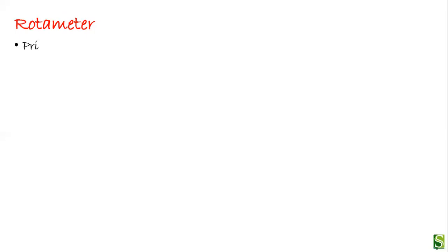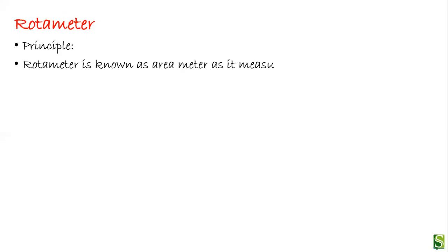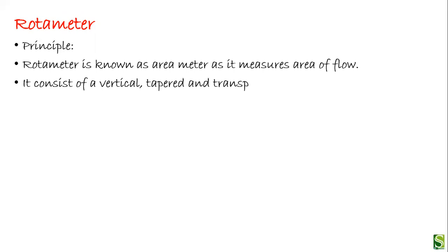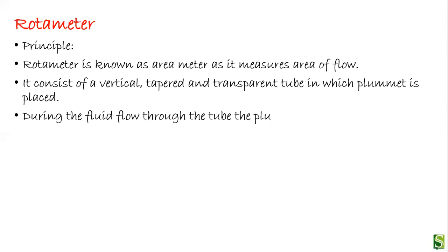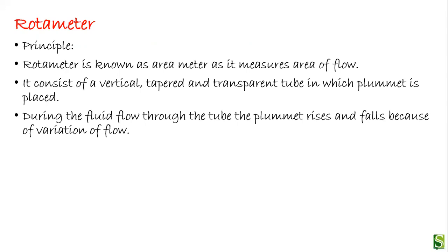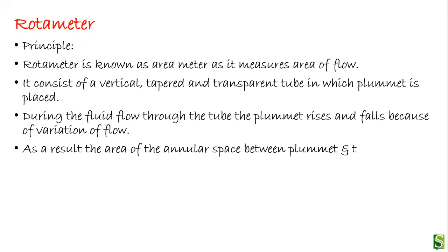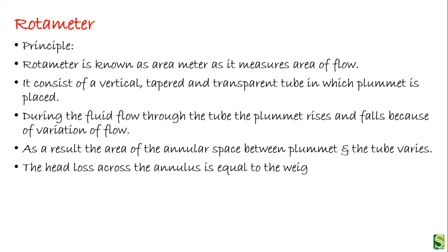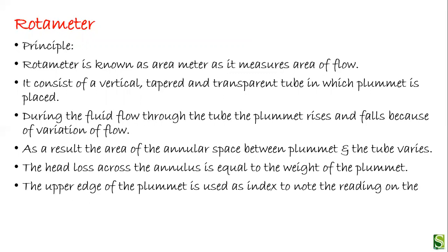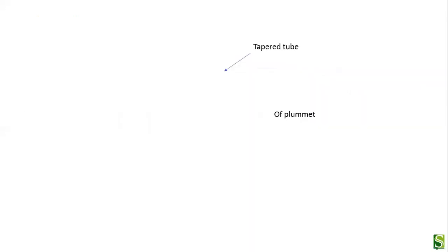Now we move to the rotameter. Its principle: the rotameter is also known as an area meter as it measures the area of flow. It consists of a vertical, tapered, and transparent tube in which a plummet is placed. The plummet is free to move as the velocity of the fluid increases or decreases. During fluid flow through the tube, the plummet rises and falls due to variation in flow, varying the area of the annular space between the plummet and the tube. The head loss across the annulus is equal to the weight of the plummet. The upper edge of the plummet is used as an index to note the reading on the tapered tube, and this value indicates the flow of the fluid.